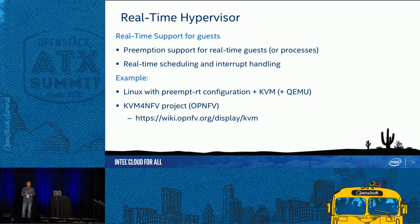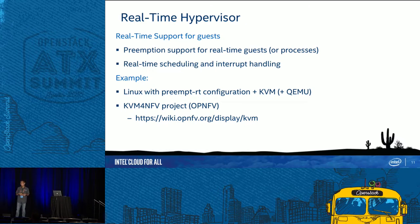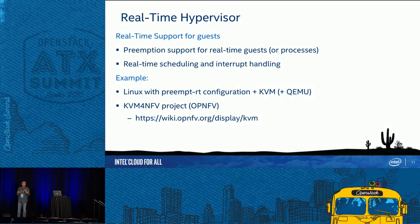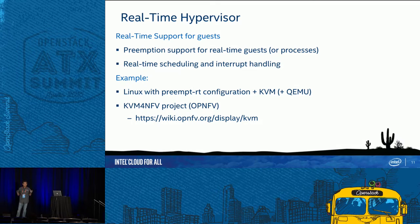A real-time hypervisor supports real-time guests by providing preemption support and real-time scheduling and interrupt handling. The example we use is Linux with the PREEMPT_RT configuration — sometimes called Real-Time Linux — plus KVM. We have been working on real-time KVM, so this is what we use as the real-time hypervisor.